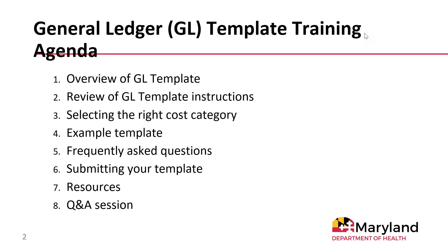Thank you, Elizabeth. And welcome, everyone. We're excited to have you with us this afternoon to talk through the General Ledger Template and specifically work through an example and cost category information for our CCS provider agency. A quick overview of our agenda today: we're going to walk through the template, review the instructions, talk about cost categories and how to make sure you're entering your costs in the right category, and look at an example template that shows the costs for a fictitious CCS agency as a reference.